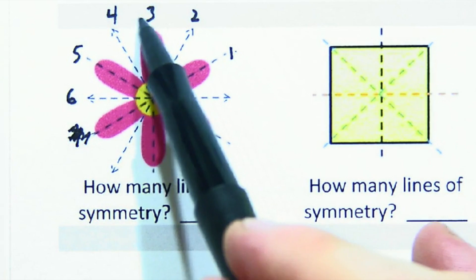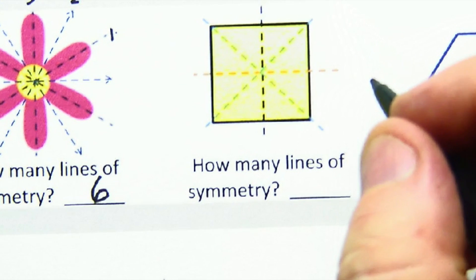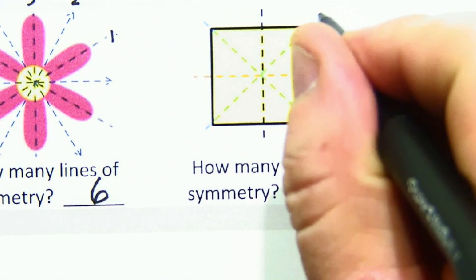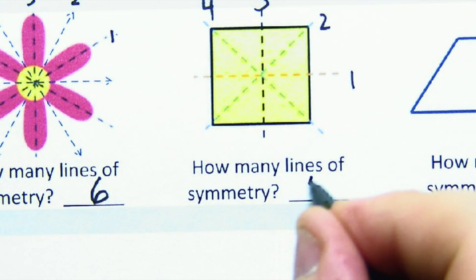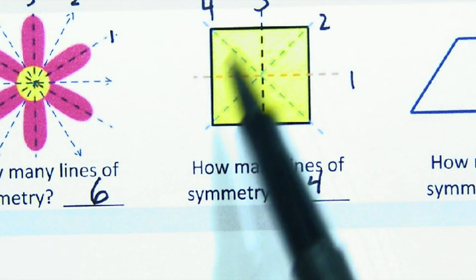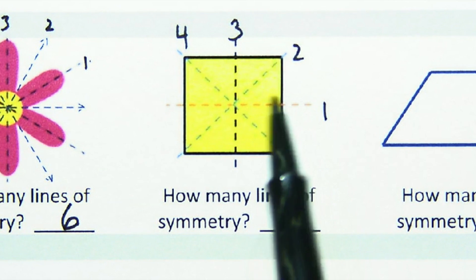One, two, three, four, five, six lines of symmetry. Here, our classic square, one, two, three, four lines in total. Now, again, we mentioned that the square is the regular polygon for the quadrilaterals, and so four sides, four lines of symmetry.